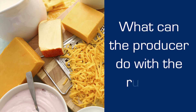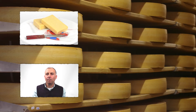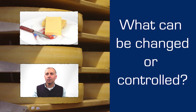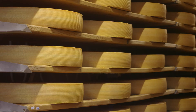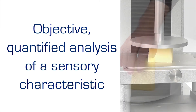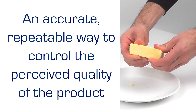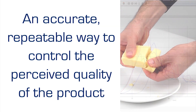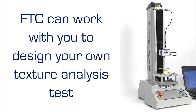Analysis of the measured data brings understanding to the effect of variables in the food supply chain and therefore the ability to optimise quality. With an accurate and repeatable texture analysis capability, the producer of solid or semi-solid cheeses can confidently measure the effect of changes to ingredients, formulation and preparation when offering an alternative choice to a diet-conscious consumer. A texture analyzer enables objective, quantified evaluation of sensory characteristics for an accurate and repeatable way to control the perceived quality of the product. Food Technology Corporation can work with you to design fixtures and develop test methodologies to meet your own unique requirements and quality standards.